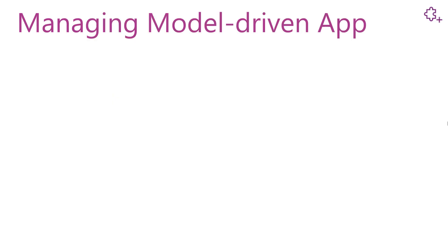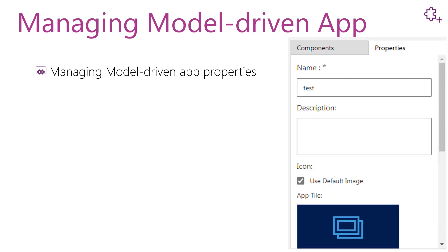After creating your model driven app, you will have some properties that you can manage. This means to update and customize these properties. You can update the name property — the name that displays to the users. It is recommended to use a meaningful name for the app. You can also update the description of what the app is, and it will also appear to the users.